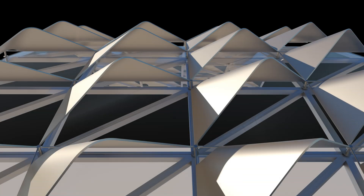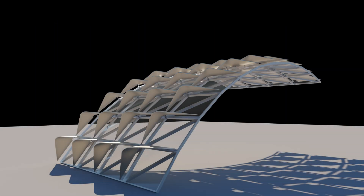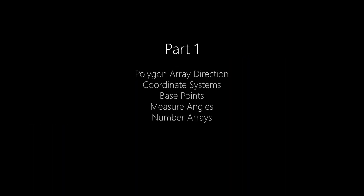We will use a simple arc surface to generate the polygons and panels and measure the angles between the polygons and a focus point to drive the heights of the sun hoods. So in part one we'll look at the polygon array direction, we're going to place some coordinate systems, place some base points that can be used to measure angles, then measure those angles and set up some number arrays.